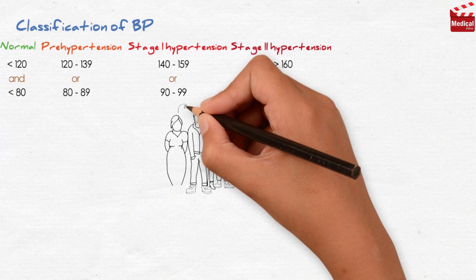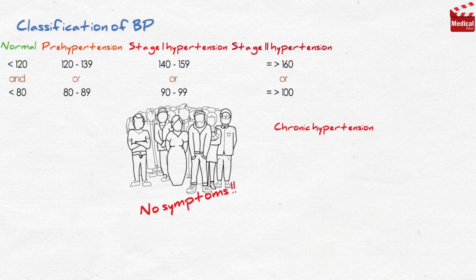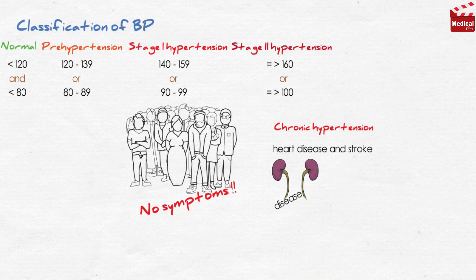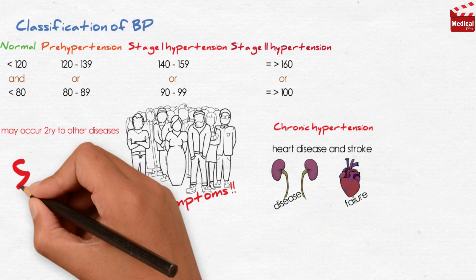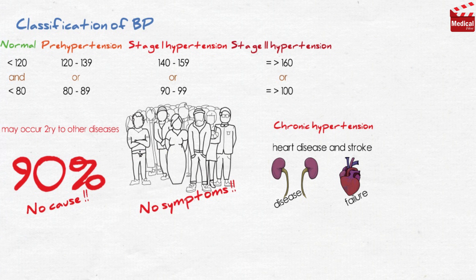Although many patients have no symptoms, chronic hypertension can lead to heart disease and stroke. It is also an important risk factor in the development of chronic kidney disease and heart failure. Hypertension may occur secondary to other diseases, but more than 90% of patients have essential hypertension, which happens with no identifiable cause.